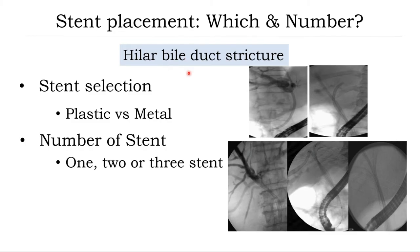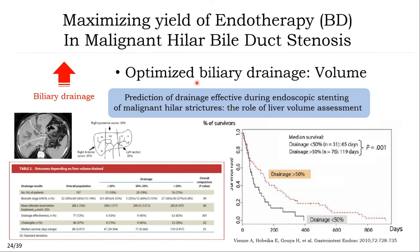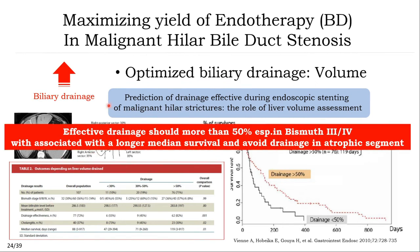Hilar bile duct stricture is more complex, as already mentioned. So stent direction — plastic or metal stent — and number of stents (1, 2, or 3) is very important for adequate biliary drainage. Adequate liver volume drained is really important. This compares less than 30%, 30 to 50%, and more than 50% liver volume drainage. The conclusion: if you drain more than 50% of liver volume, you will get better median survival and less cholangitis. The standard recommendation is to drain hilar box — especially Bismuth 3 and 4 — draining at least more than 50% of liver volume.